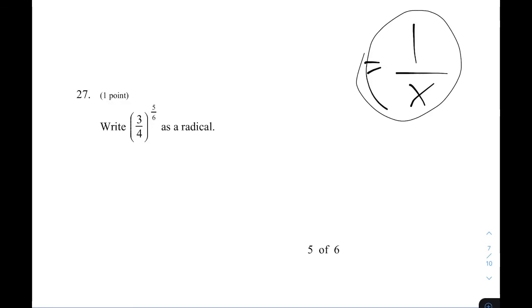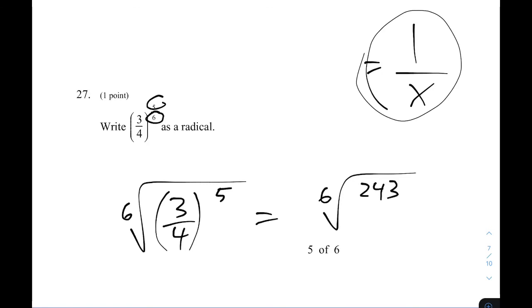Last question on this page. Write 3 quarters to the 5 6th as a radical. So 3 quarters is the base. Writing it as a radical, I take the bottom, so the denominator, and I make it the index. And I take the top one, I make that an exponent still. So I have the 6th root of 3 quarters to the 5th power. If I wanted to do 3 quarters to the 5th power, I could say this is the 6th root of 243. And what's 4 to the 5th power? 1024? I guess. I don't really think that that's any nicer, but these are equivalent to each other. So this one would be good, or that one would be good. And I'll stop the recording to do the last page.